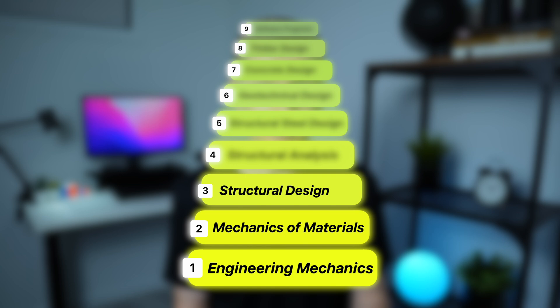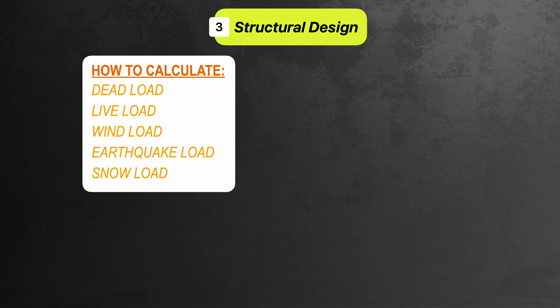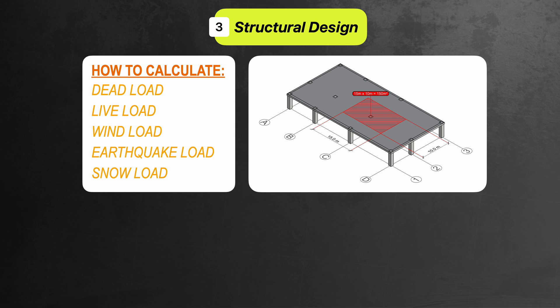Topic number three is structural design, and this is where you'll get your first real taste of practical structural engineering. This topic is all about understanding how to calculate and apply loads to a structure and finding the worst combination of loading. In topics one and two you learned how to calculate internal forces and deflections from a given loading, but in this topic you actually learn how to find that loading yourself. So you need to learn how to calculate dead loads, live loads, wind loads, earthquake loads and maybe even snow loads, and then how to find a member's tributary area so you can apply the correct amount of loading.